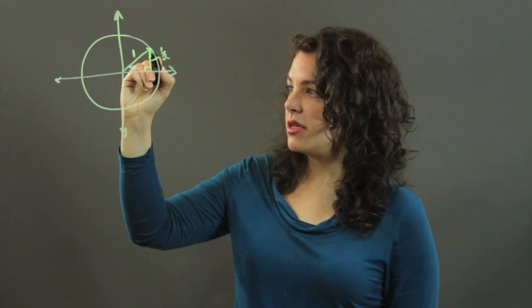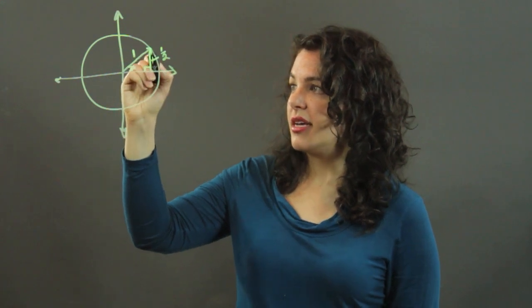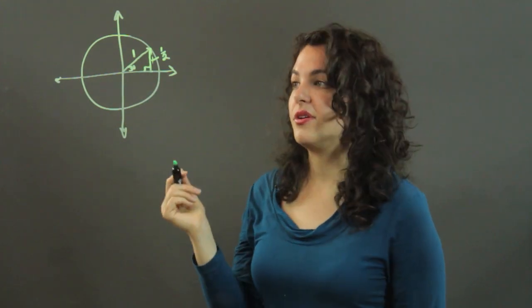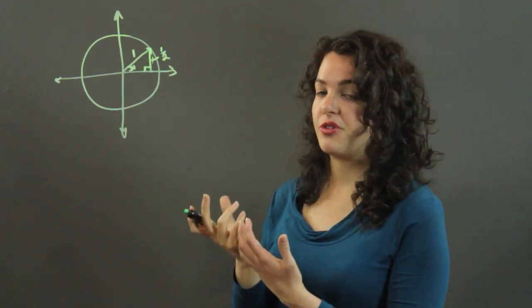So this length is 1 half, and that's the value of the sine of 30 degrees. Again, I just care about that y value, because that gives me sine in a unit circle.